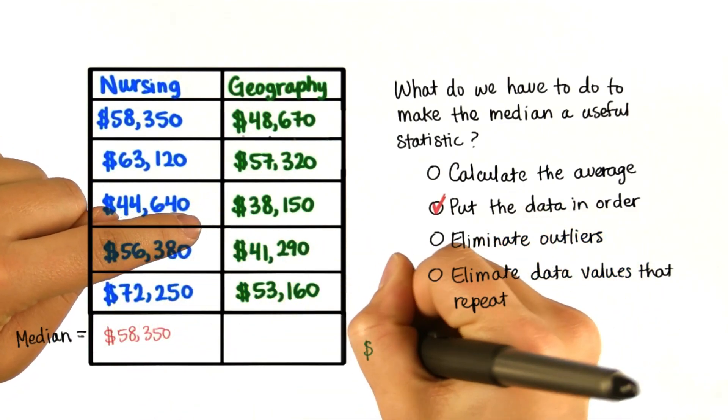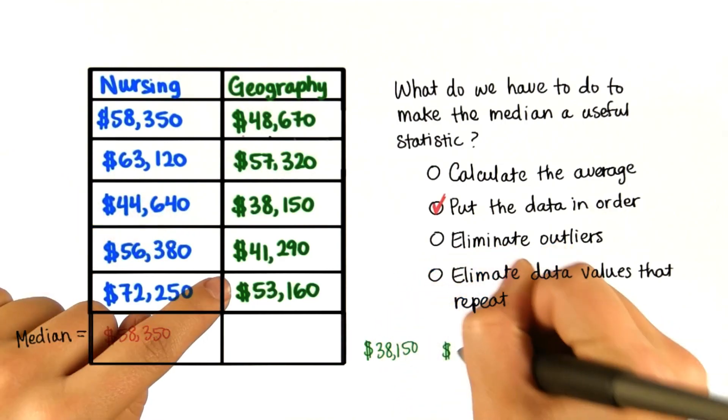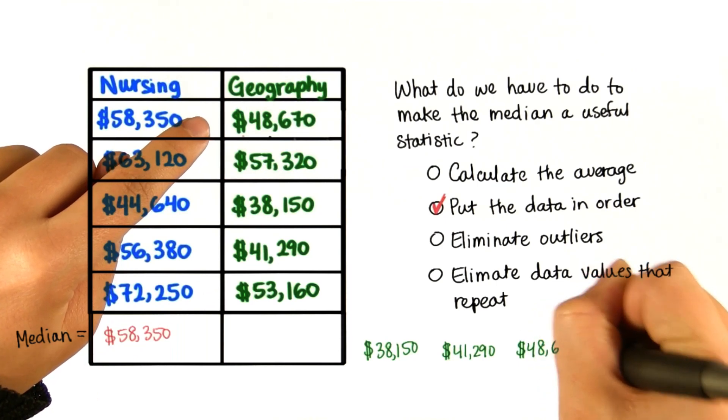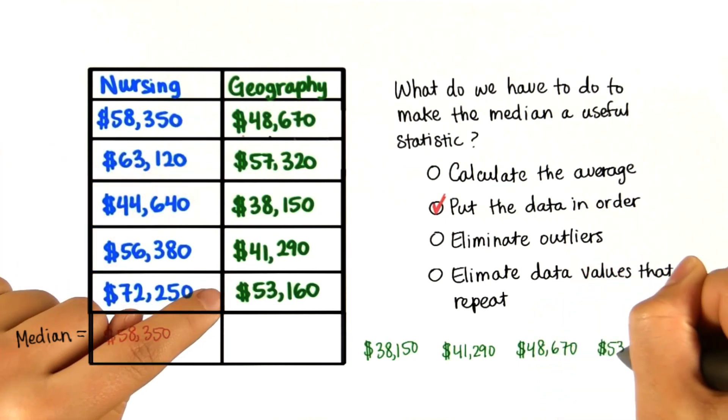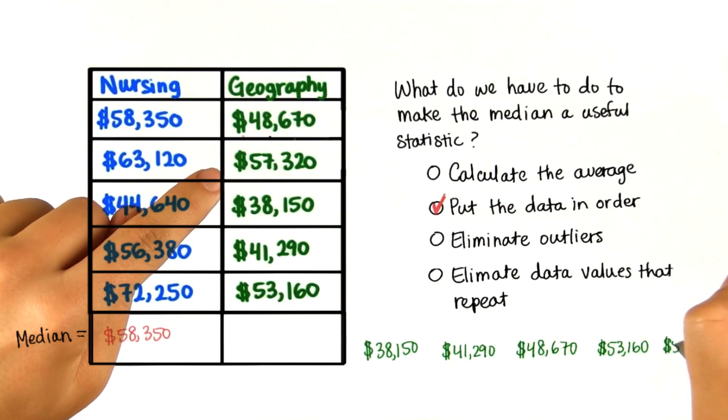Let's do the same for the geography majors. First we have $38,150, then we have $41,290, then $48,670, then $53,160, and finally $57,320.